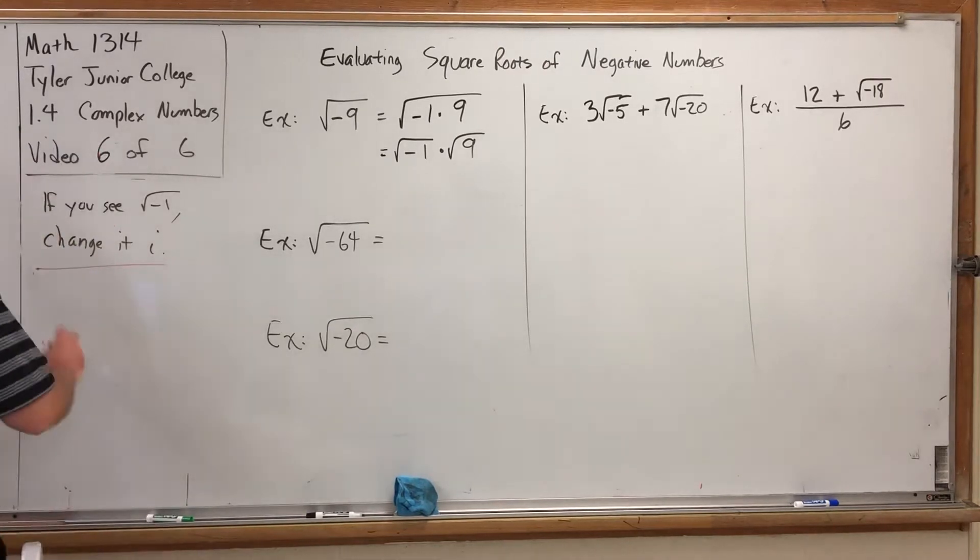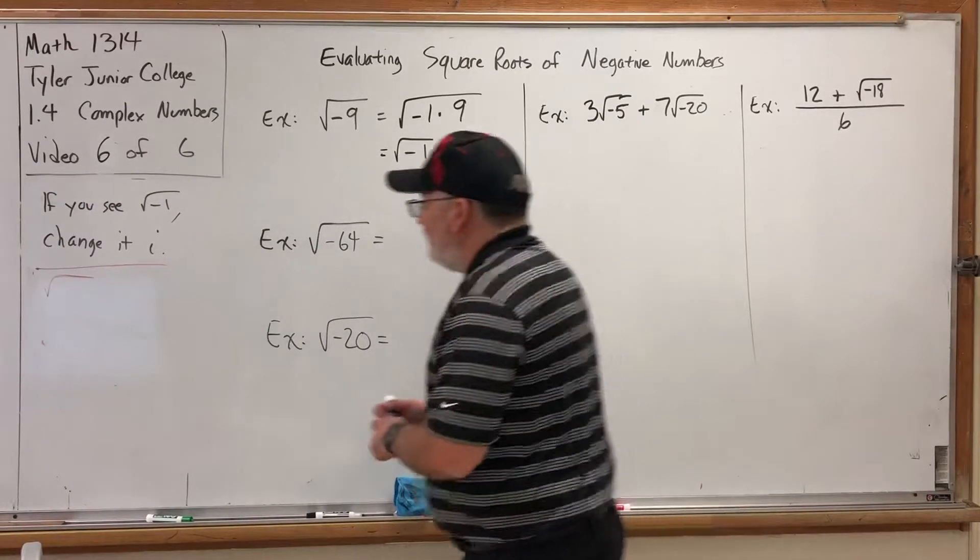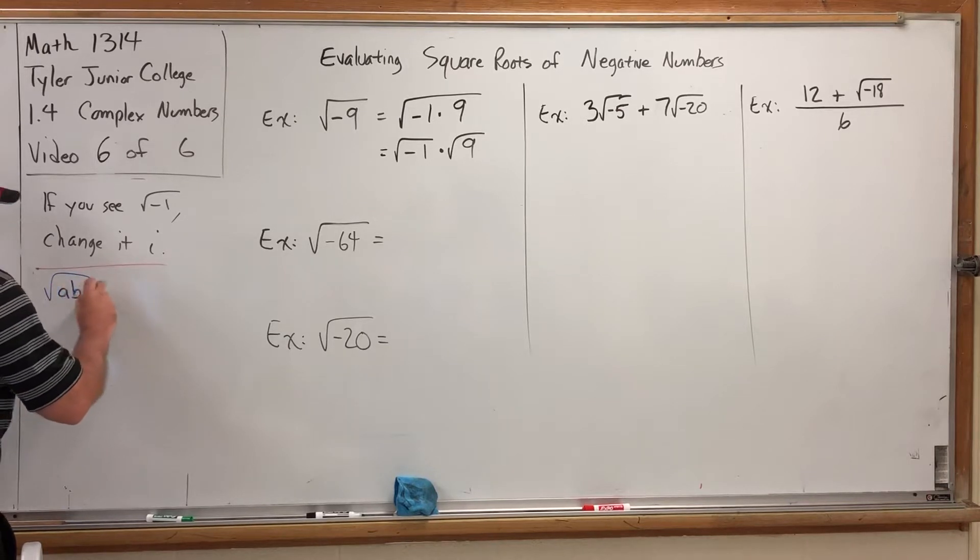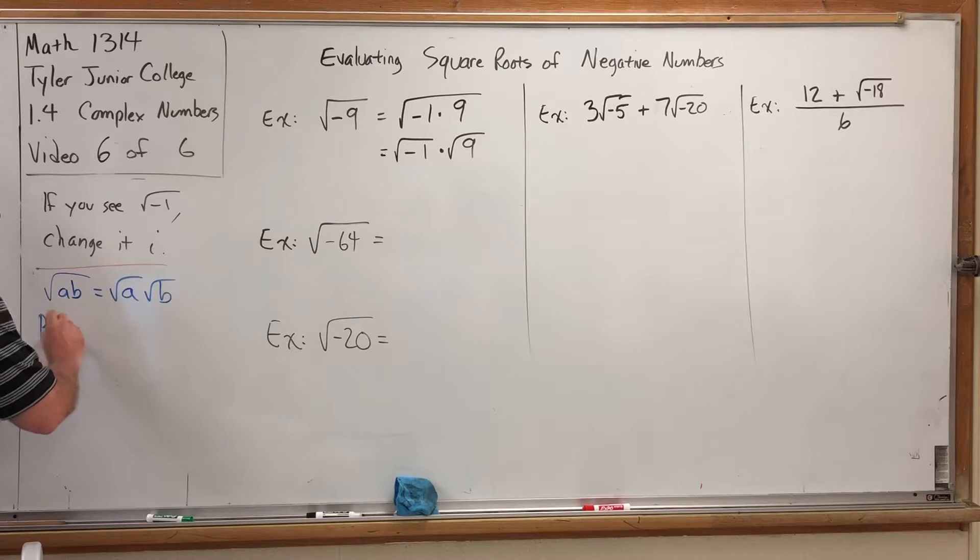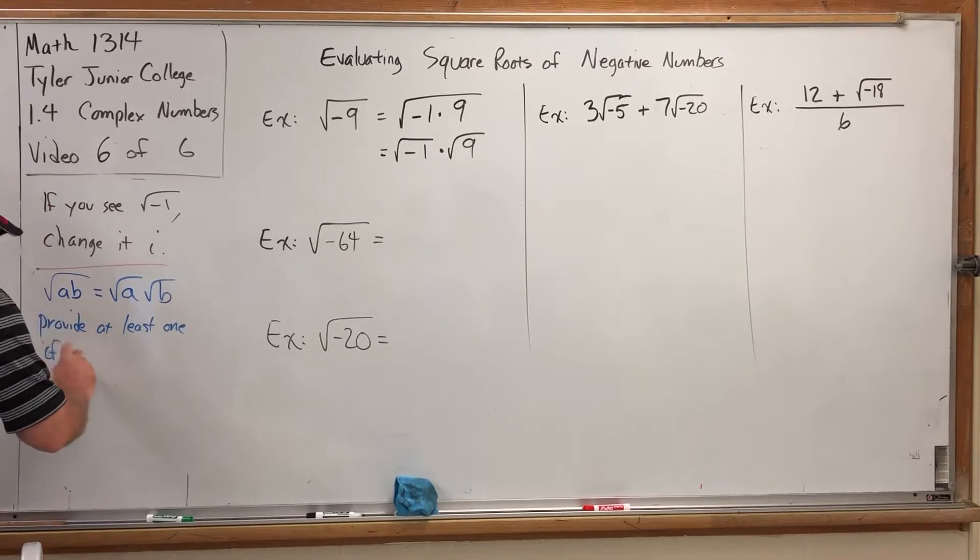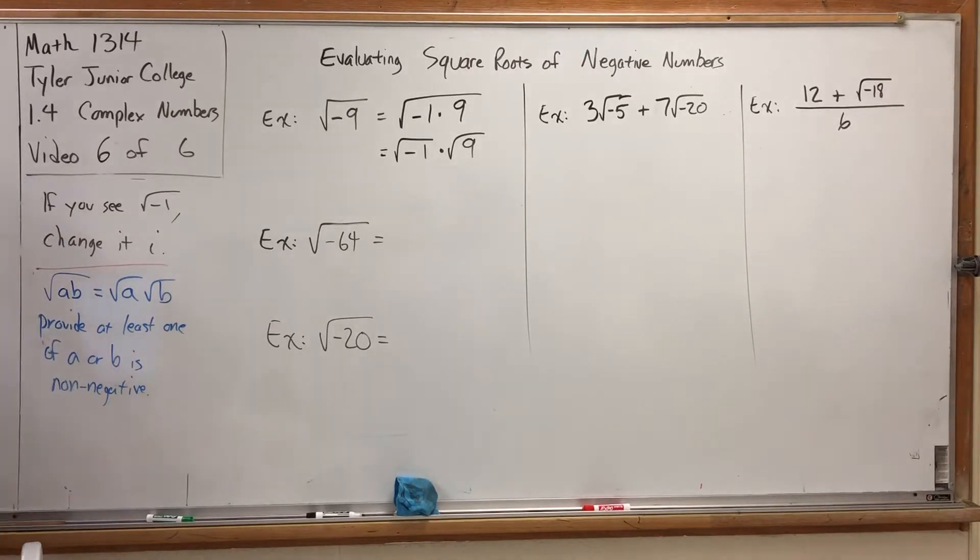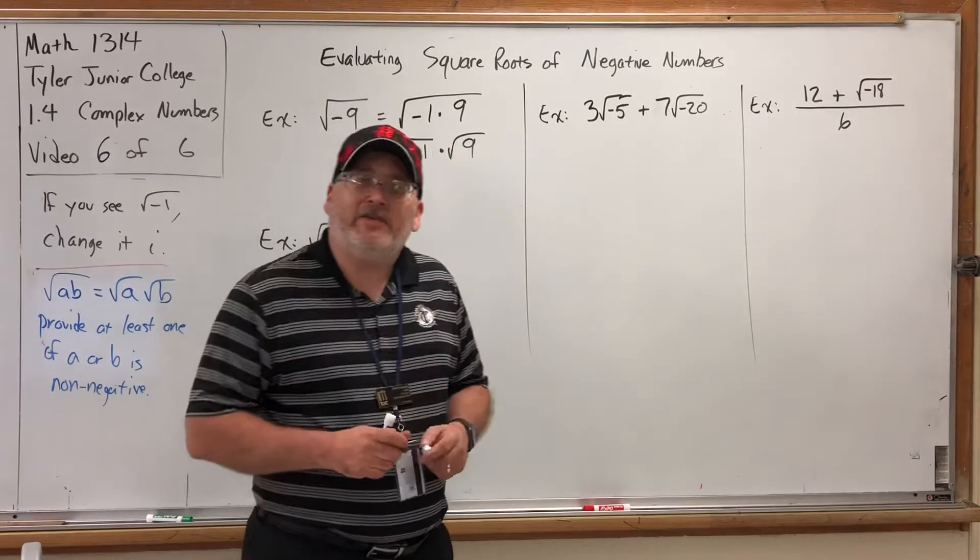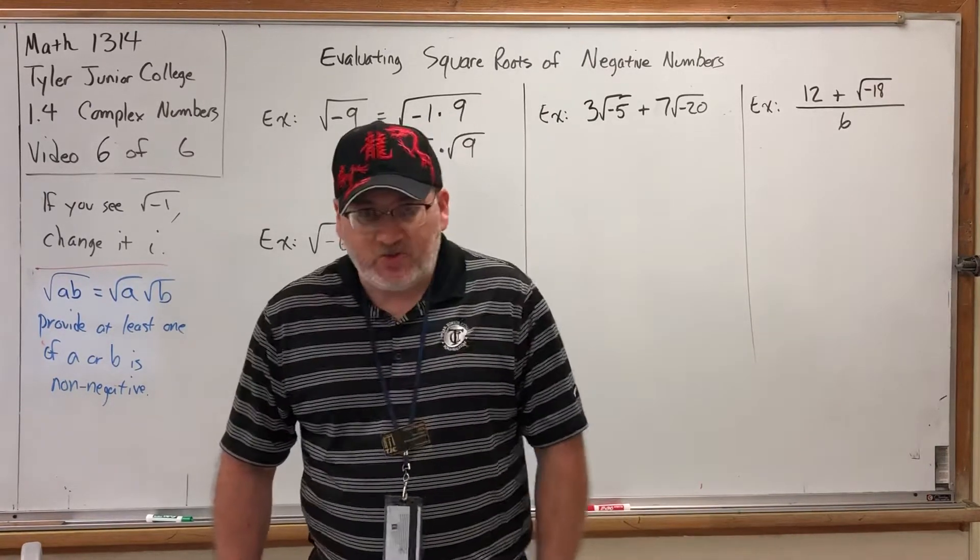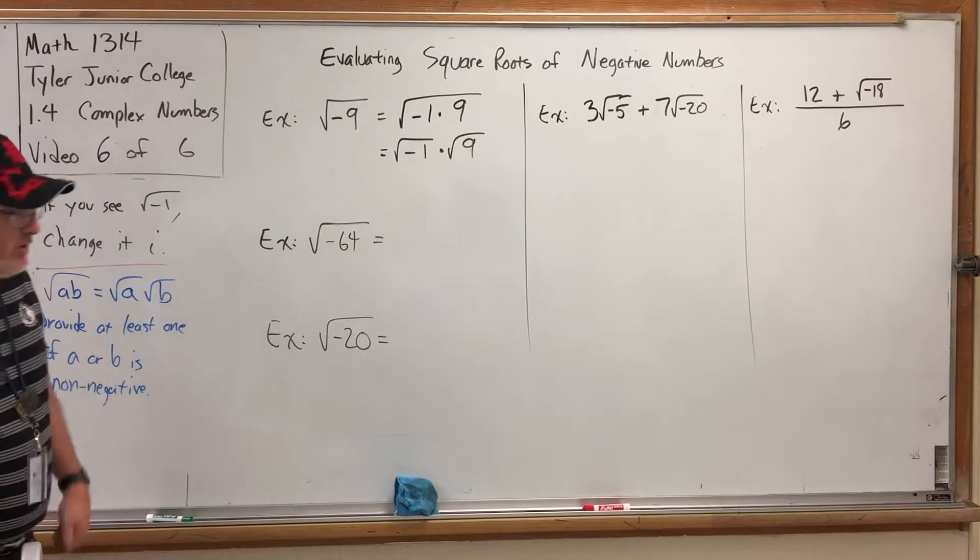Let me write a symbol for what I just said about splitting of a square root of a product. The square root of a product, the square root of a times b, is equal to the square root of a times the square root of b, provided at least one of a or b is non-negative. Non-negative meaning not negative. I didn't say positive, because the opposite of negative is not positive. The opposite of negative is non-negative, which means it's zero or it's positive. So as long as at least one of these isn't negative, you can split up the square root across a multiplication problem, like we did here.